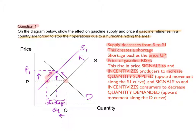This upward movement along the supply curve is an increase in quantity supplied. It will also signal to and incentivize consumers to decrease quantity demanded — not demand — because the demand curve hasn't shifted. This is an upward movement along the demand curve. It's very important to know when to use the word 'demand' and when to use 'quantity demanded.' If the demand curve shifts, we say there has been a change in demand; if there is a movement along the demand curve, we say there has been a change in quantity demanded. The same applies to supply: a shift of the supply curve means a change in supply, while a movement along the supply curve means a change in quantity supplied.